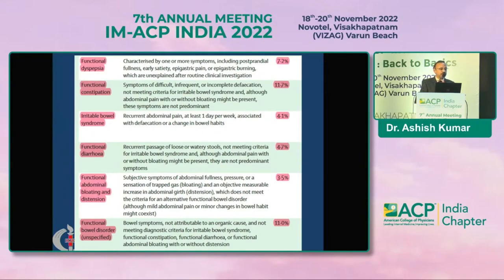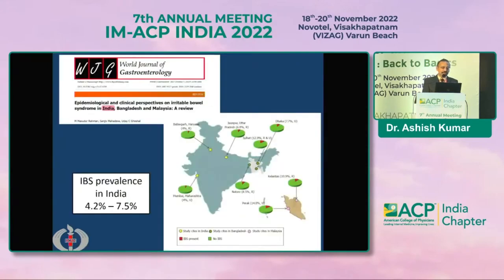The most common was constipation — as Dr. Rajesh Upadhyay mentioned, up to 11–12% had constipation — and IBS was around 4%. Dyspepsia or upper abdominal discomfort was around 7%. In India, a large study on prevalence of IBS, irritable bowel syndrome, found that at least 4–7% of the population have irritable bowel syndrome.